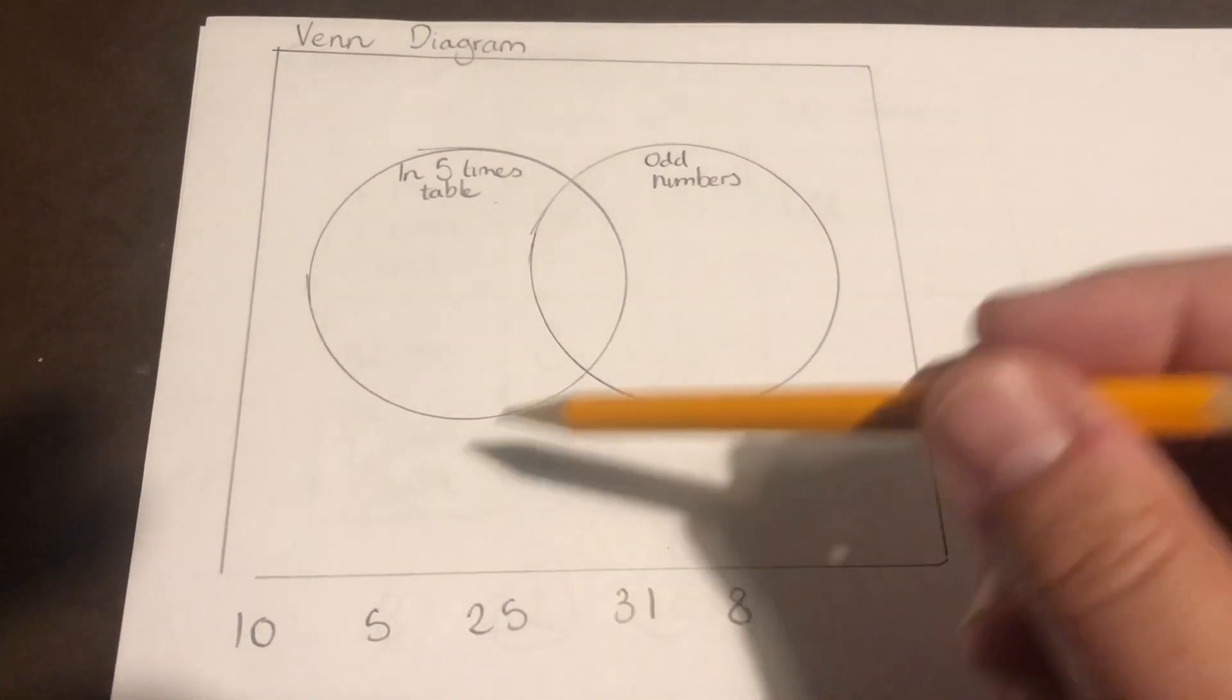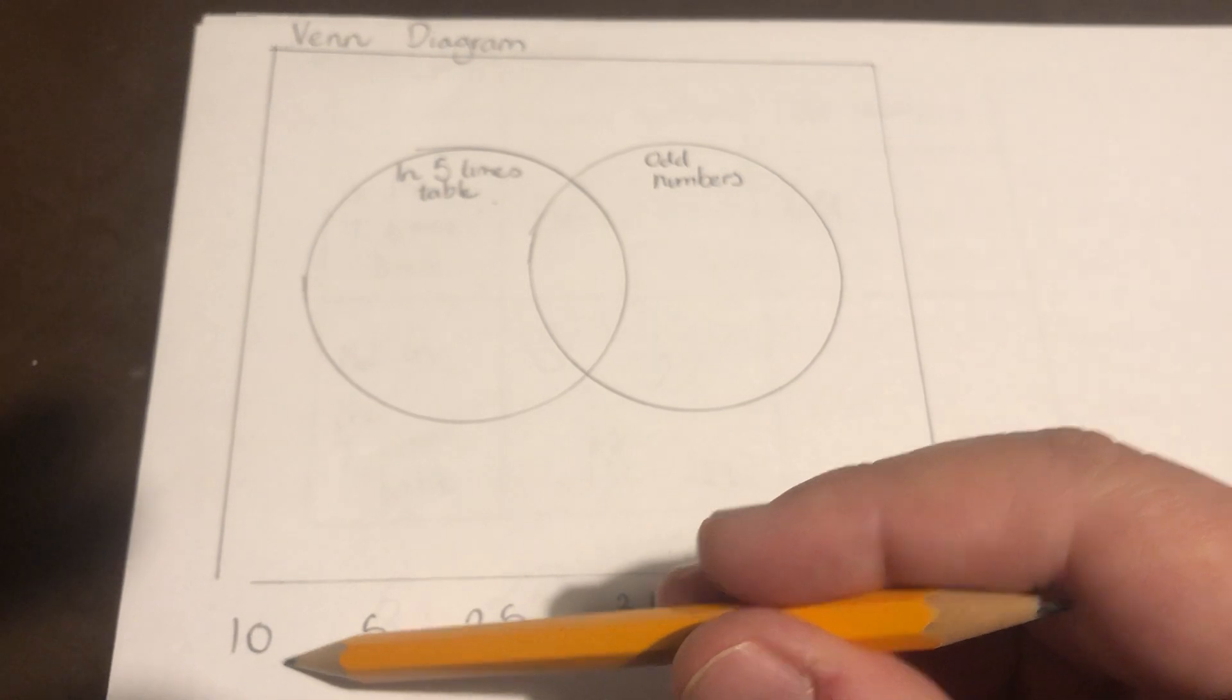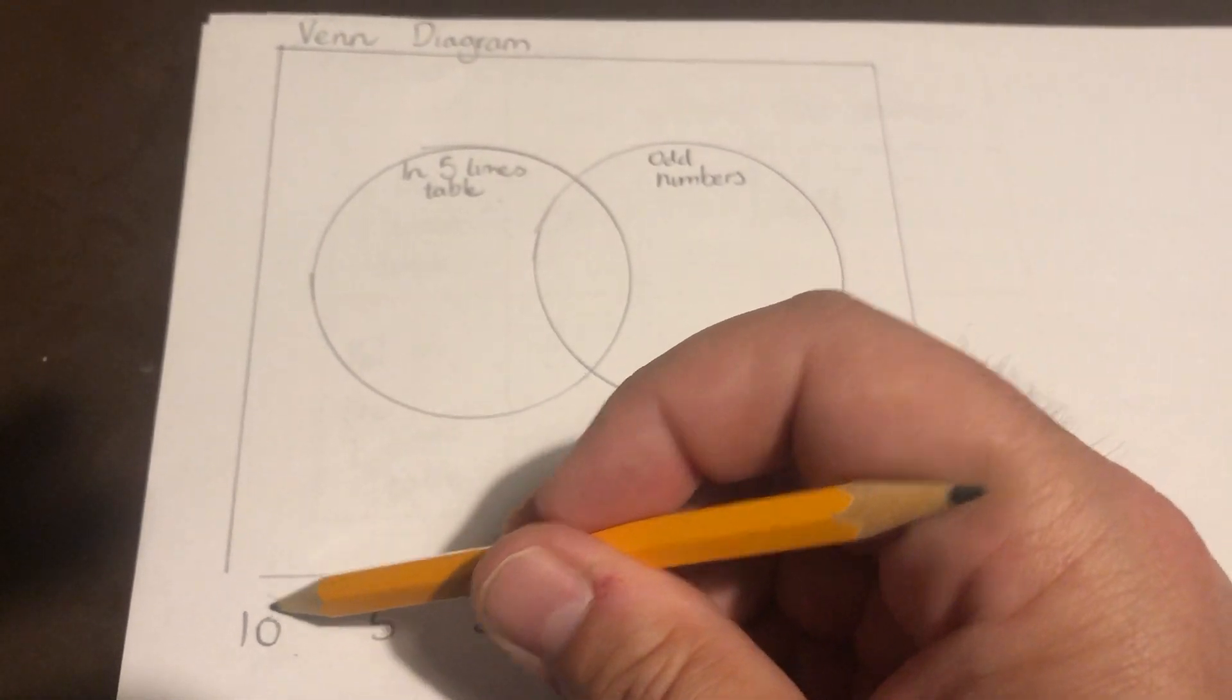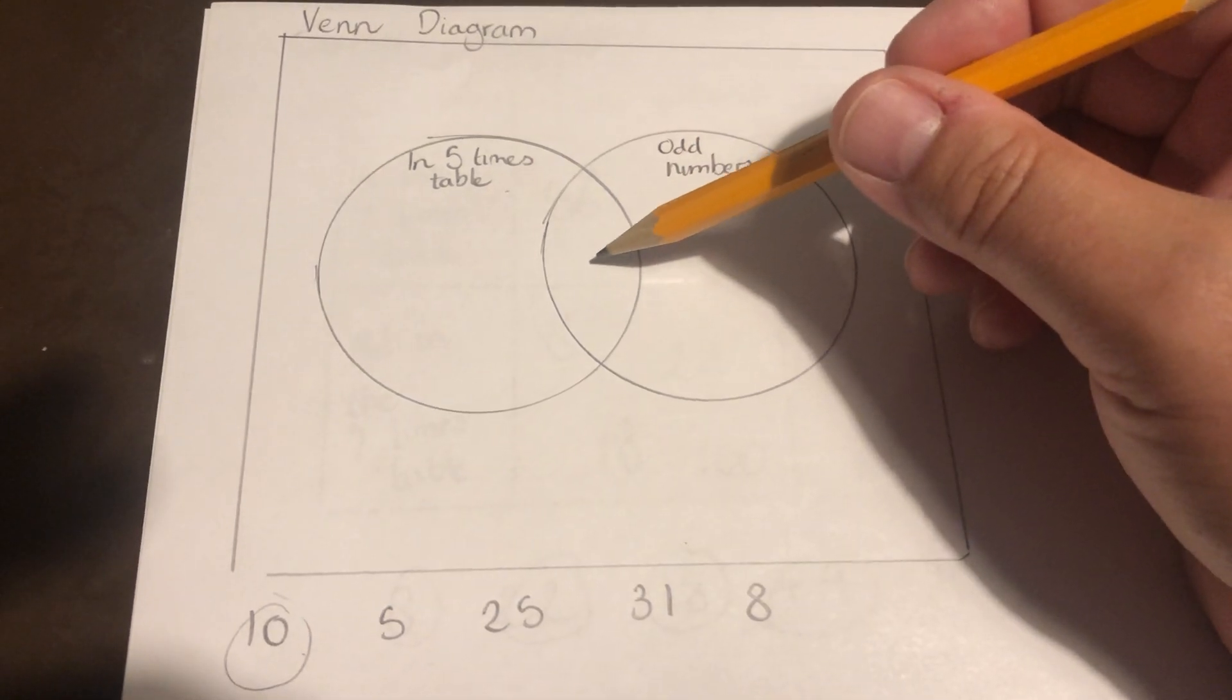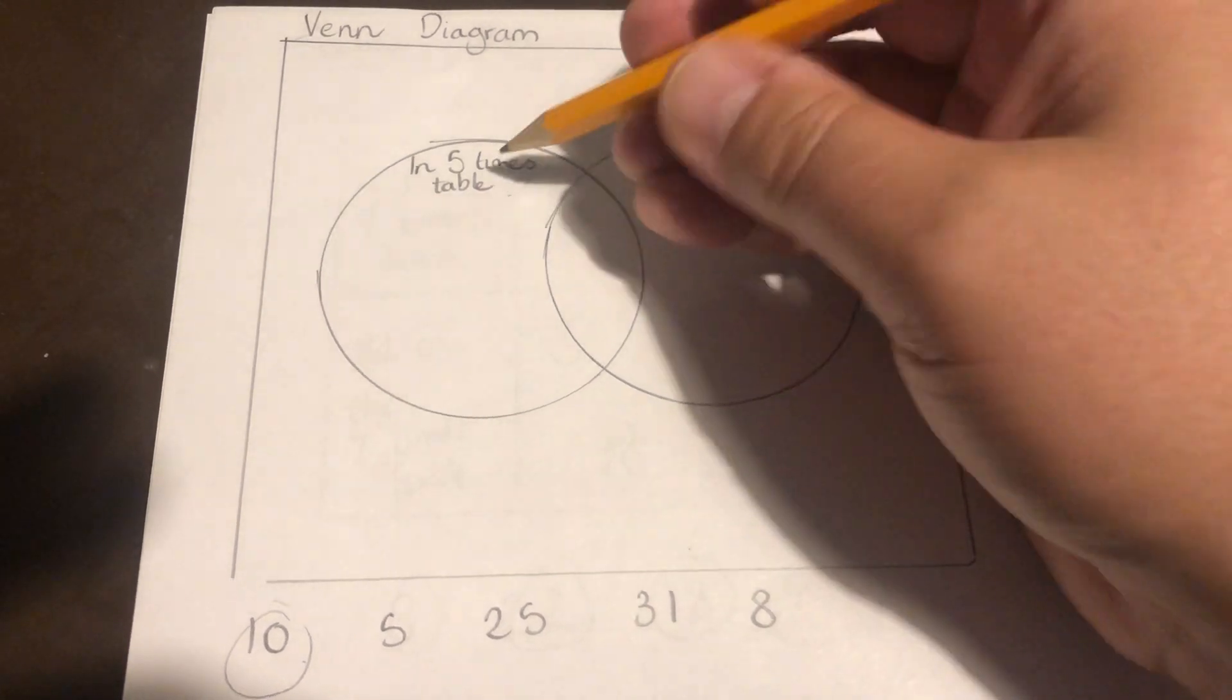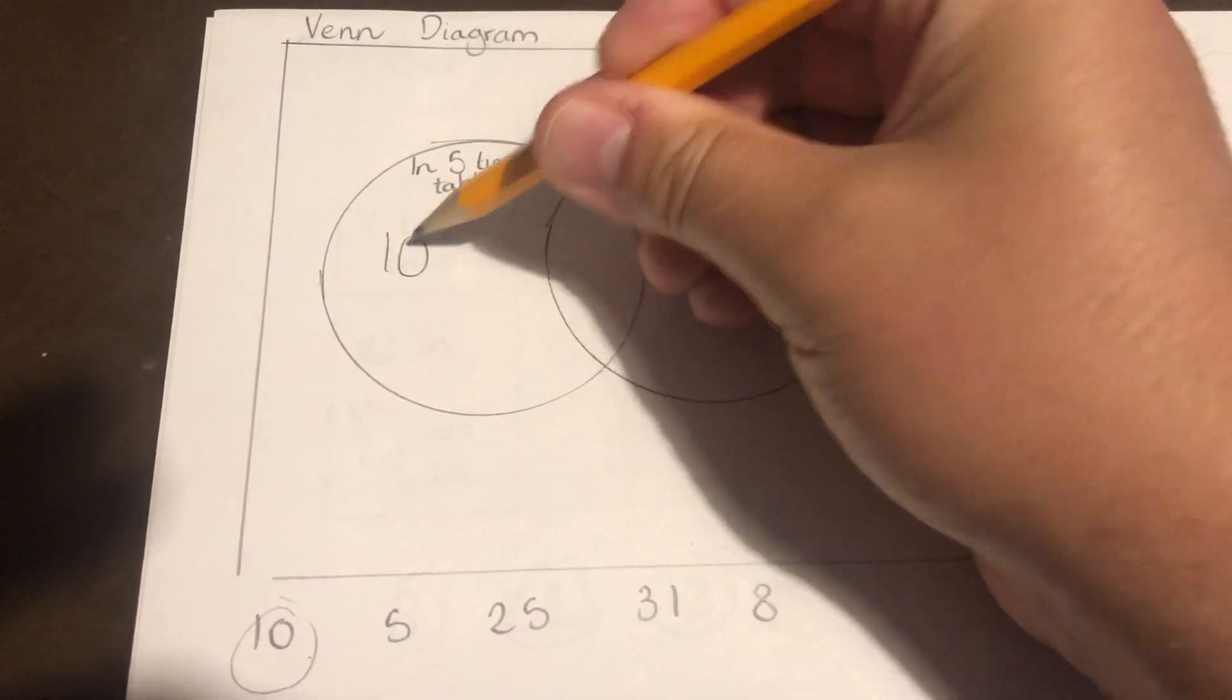So again, if I go through my numbers, I'm going to place them in the grid. I've got number 10. It is in the five times table, so it's going to go inside this circle. It's not an odd number, so it's going to fit here.